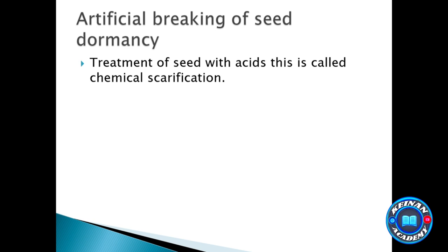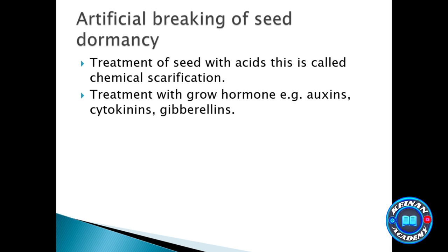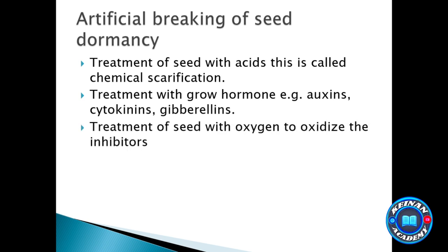Another artificial method is treating seeds with hormones such as auxin, cytokinin, and gibberellins — which are hormones that promote growth and will be explained in upcoming lectures. Another treatment is exposing seeds to oxygen, which is important because it oxidizes inhibitors, removing them and breaking dormancy.